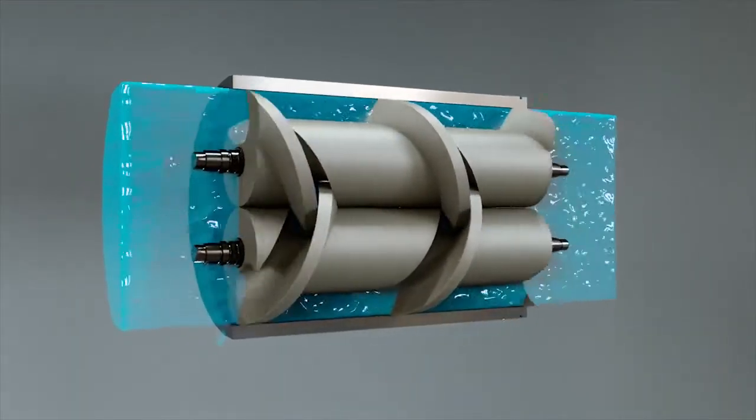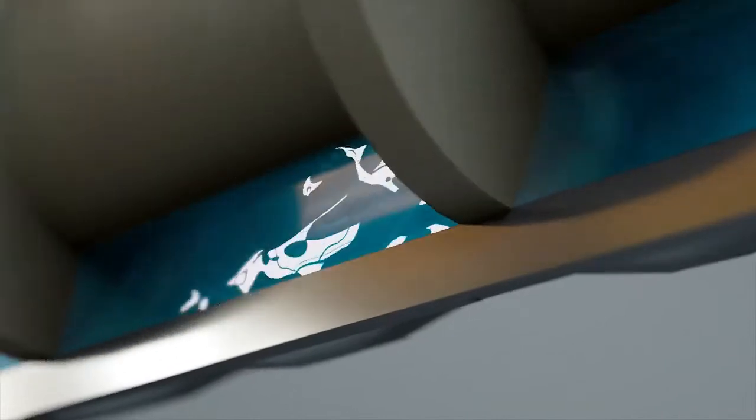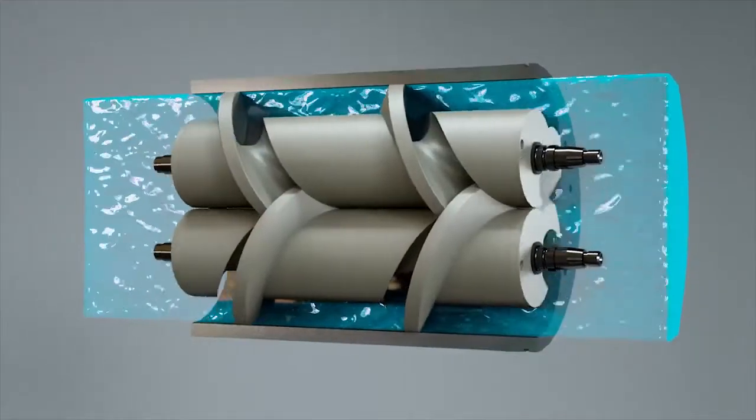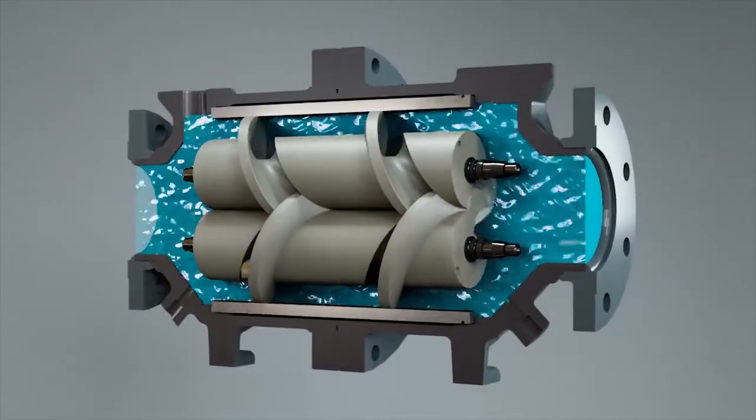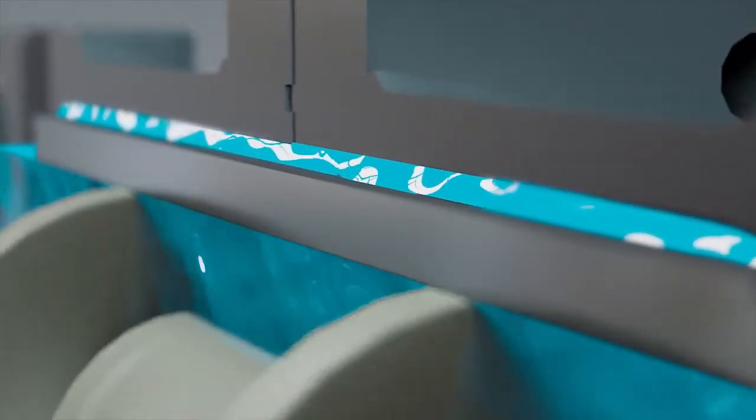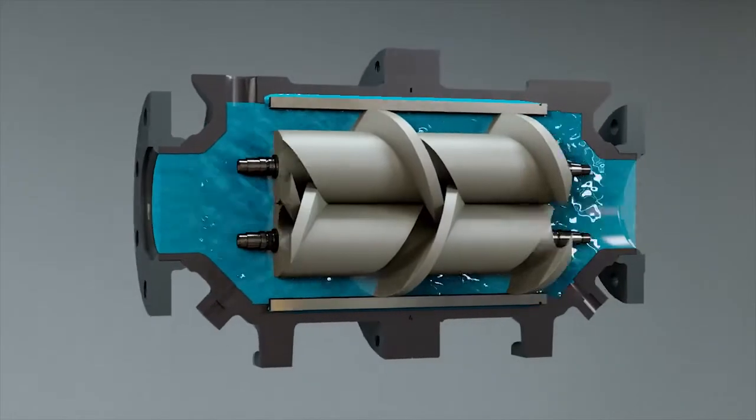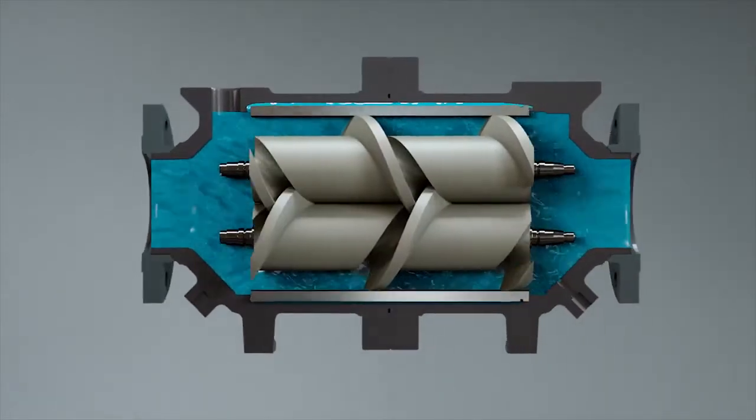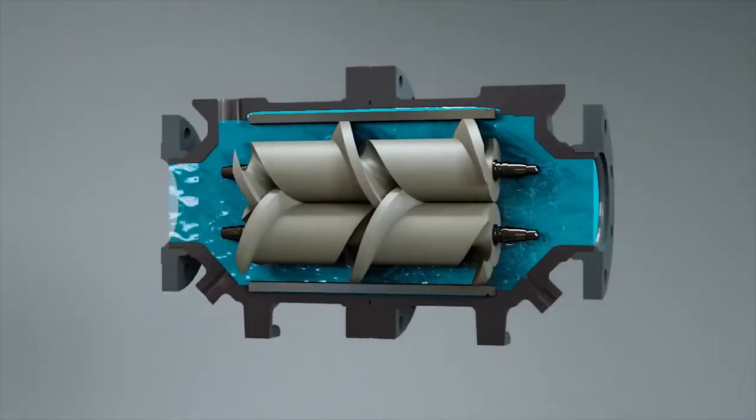While most meters only have one case, causing the meter to expand and shrink with pressure and temperature changes, the BI-ROTOR PLUS has a double case design. This allows liquid to reach both the inside and outside of the measurement chamber, maintaining equal pressure on both sides, thus eliminating a contributing factor in meter inaccuracies.